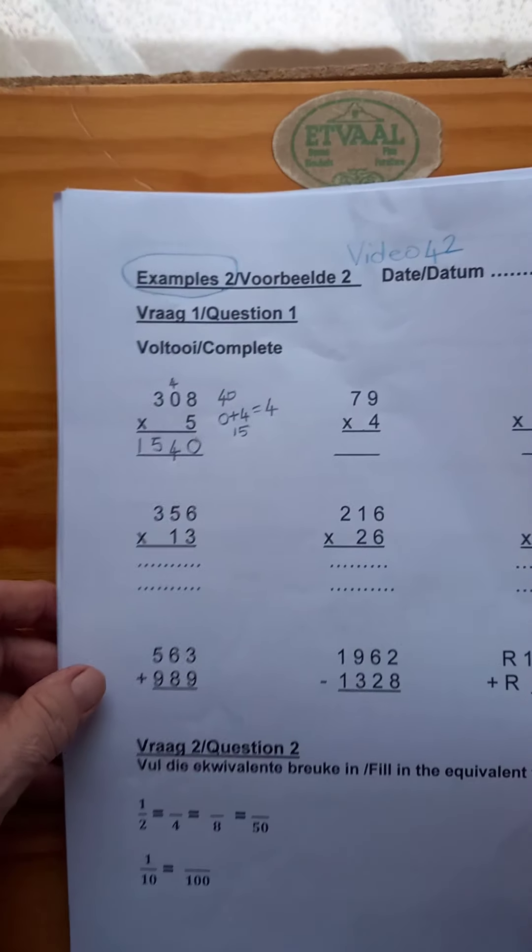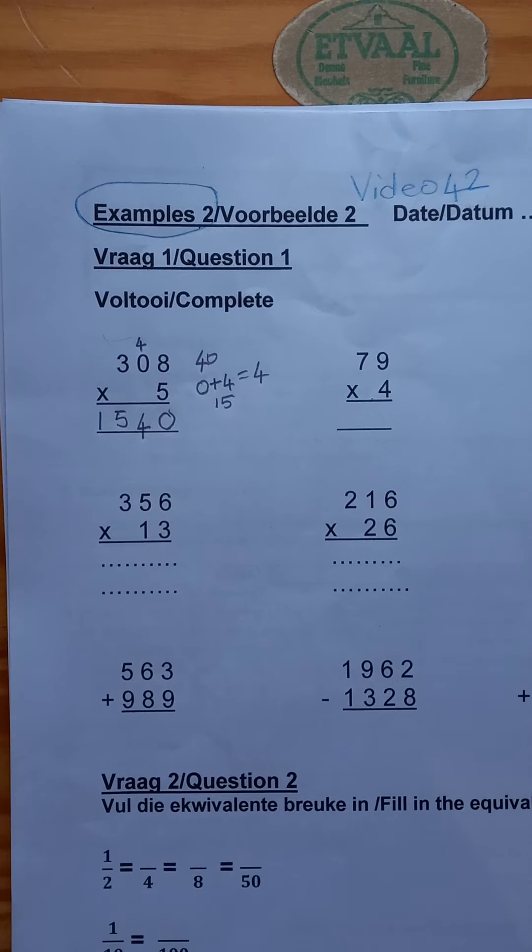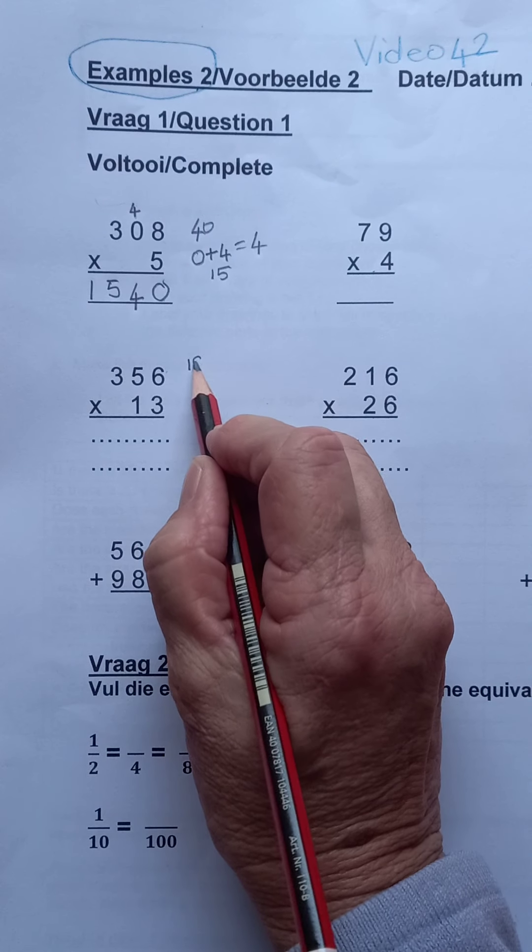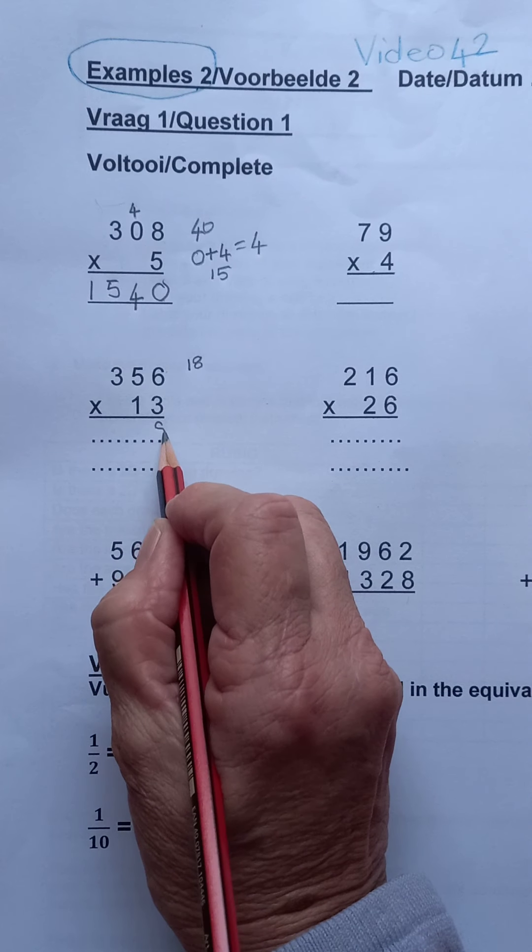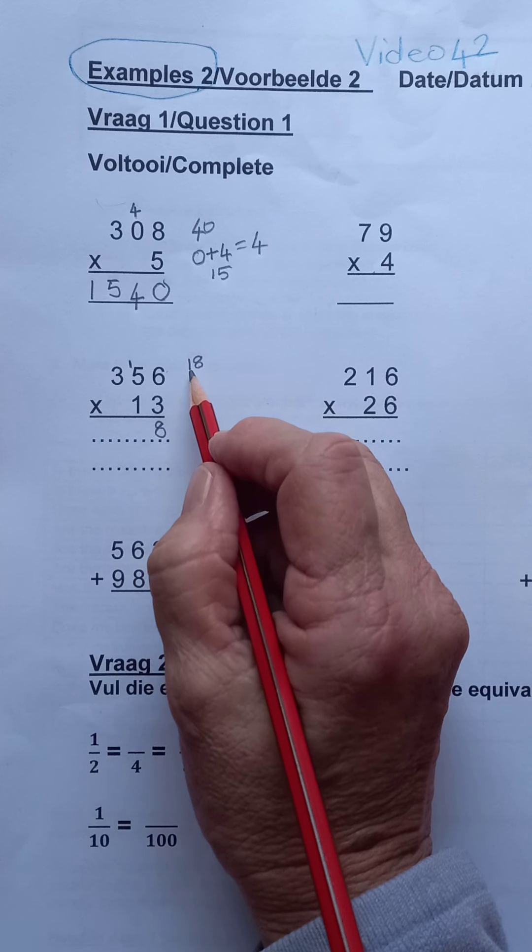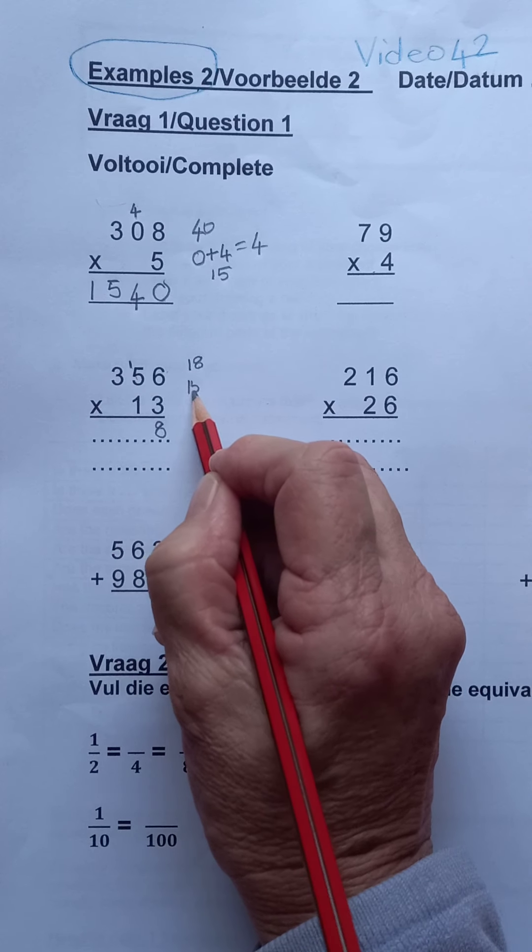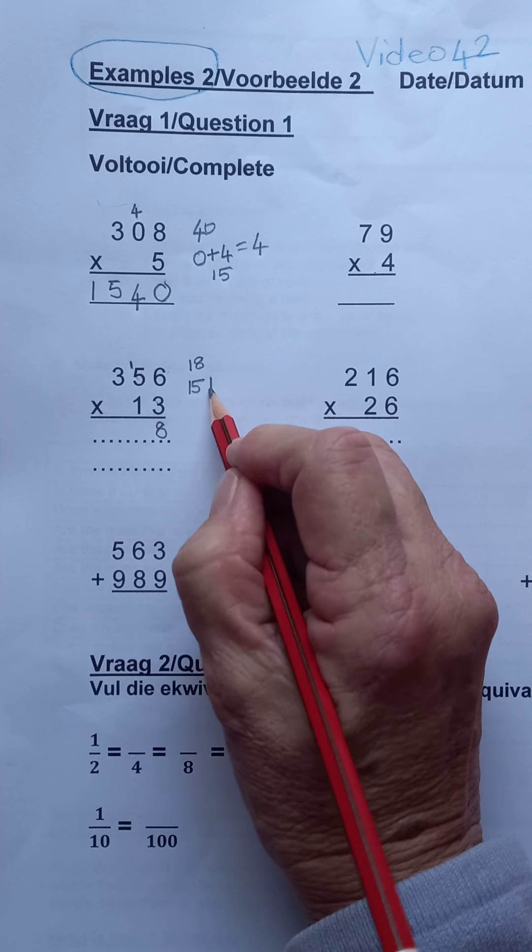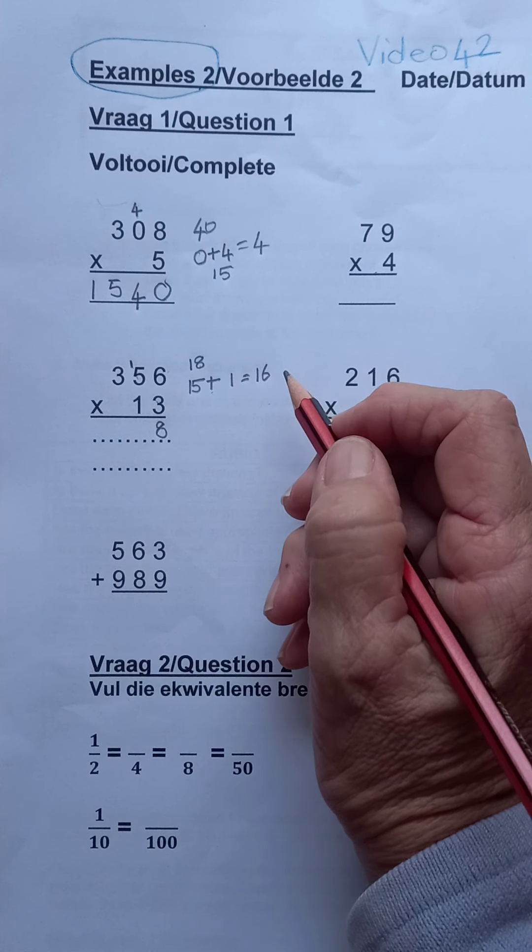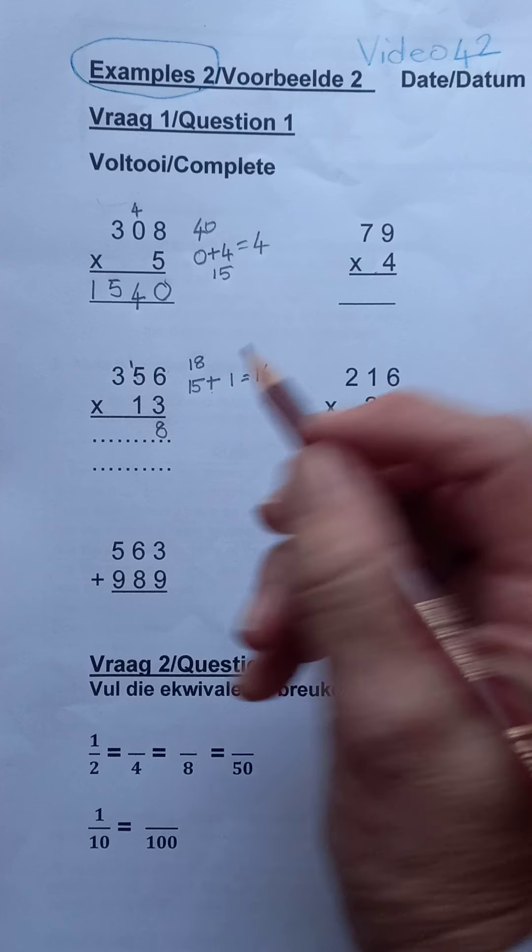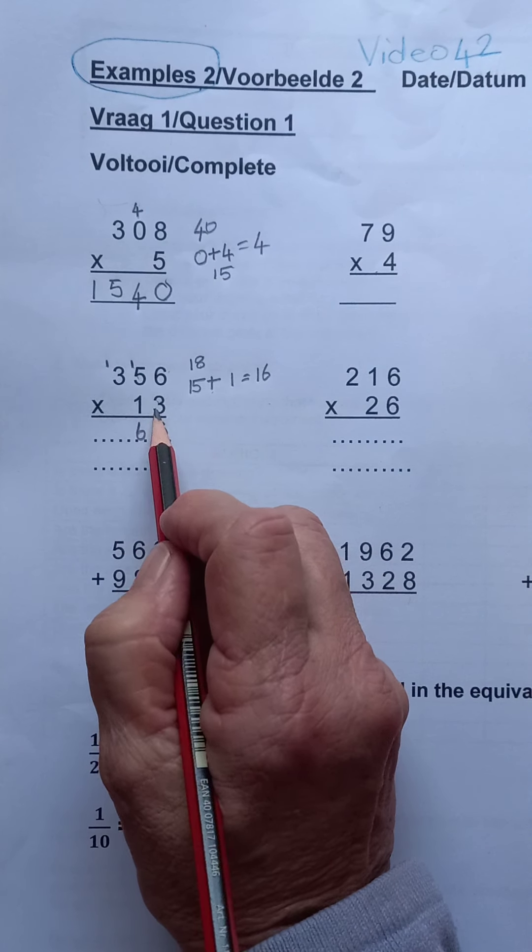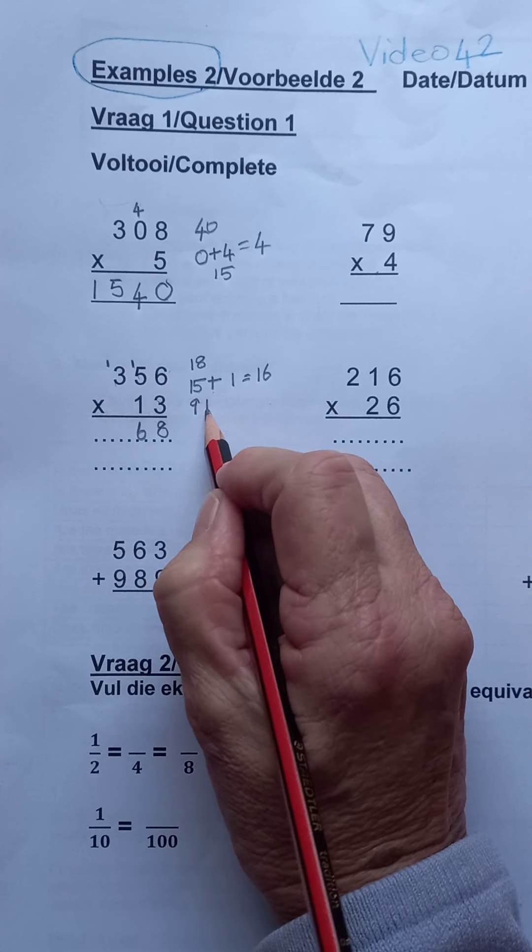Let's see, 3 times 6 is 18, so you put the 8 there. Then 3 times 5 is 15, plus the 1 ten is 16. So the 6 goes there and the 10 goes there.